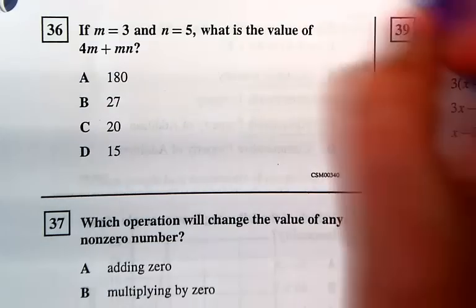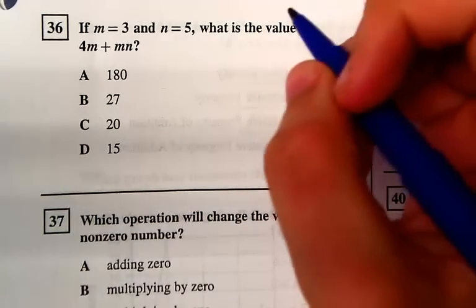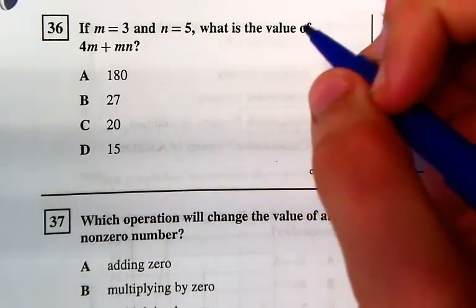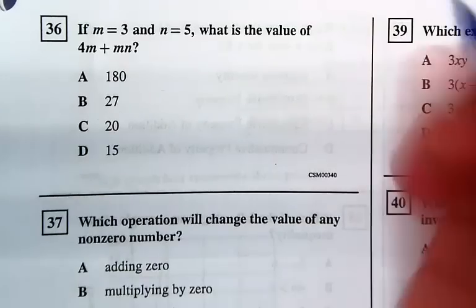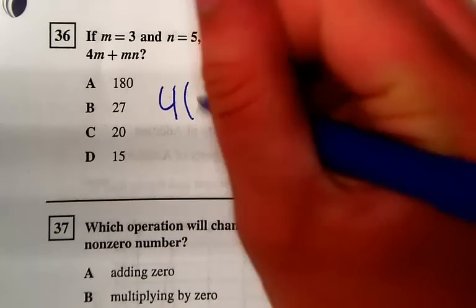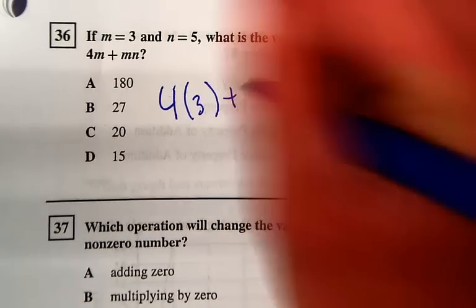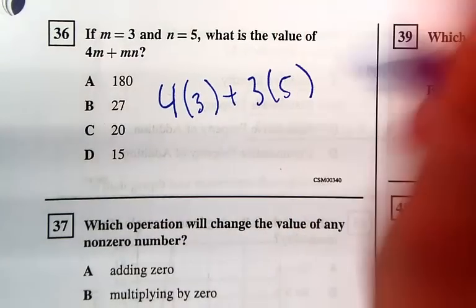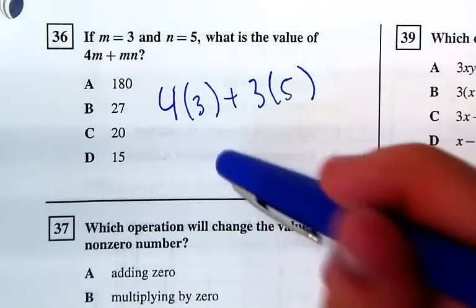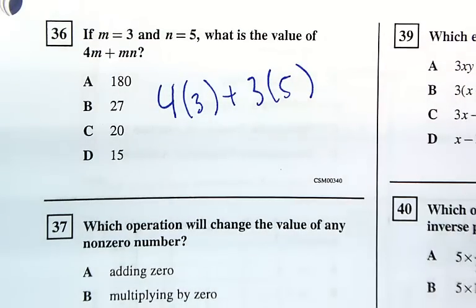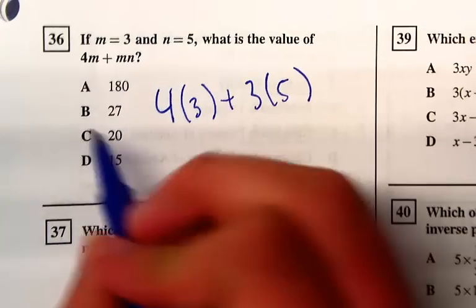The question is: if M equals 3 and N equals 5, what is the value of 4M plus MN? First, you substitute in 3 for M, so you do 4 times 3 plus 3 times 5. 4 times 3 is 12, plus 3 times 5 is 15, which equals 27. The answer is B.